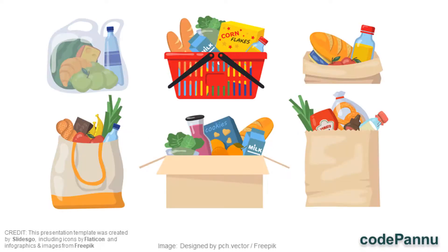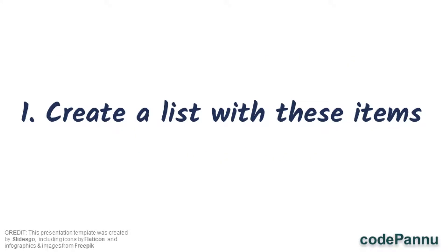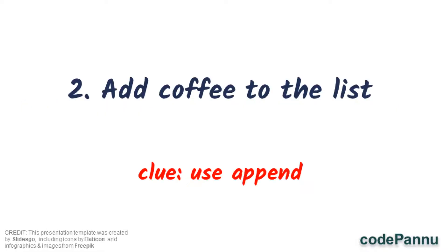Let us imagine: you and your mother are planning to go to the supermarket. Your mother has told you to write the list of items she wants to buy. She tells you to add the following items: tea, sugar, biscuit, dal, wheat, rice, cardamom, water bottles, lunch box, yoga mat, oil, and snacks. So your first task is to create a list with all these items. You're welcome to add more items if you want.